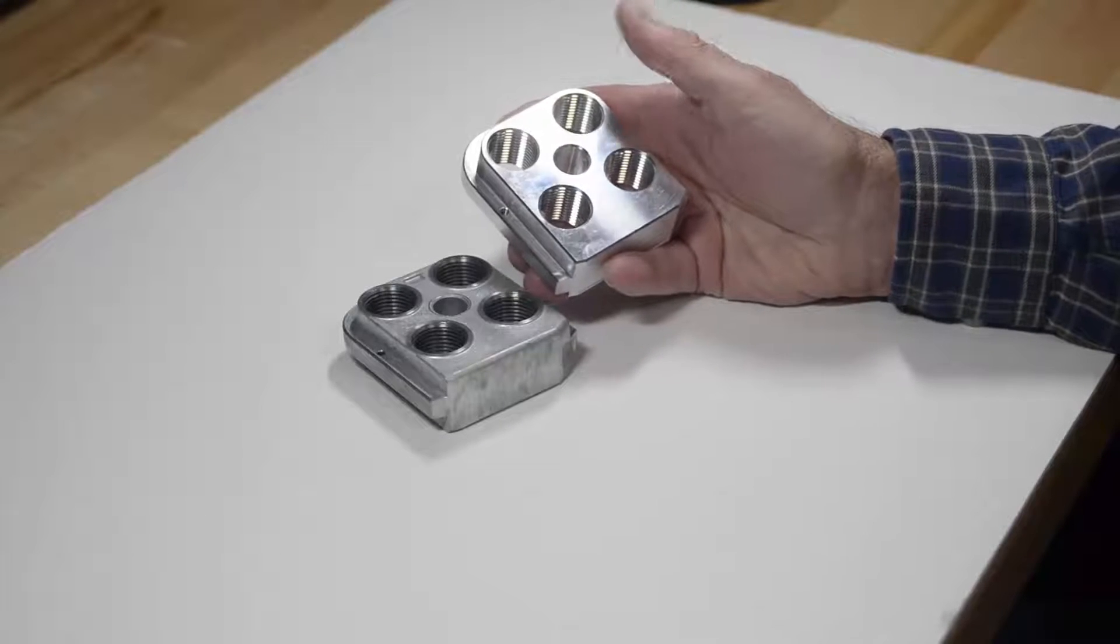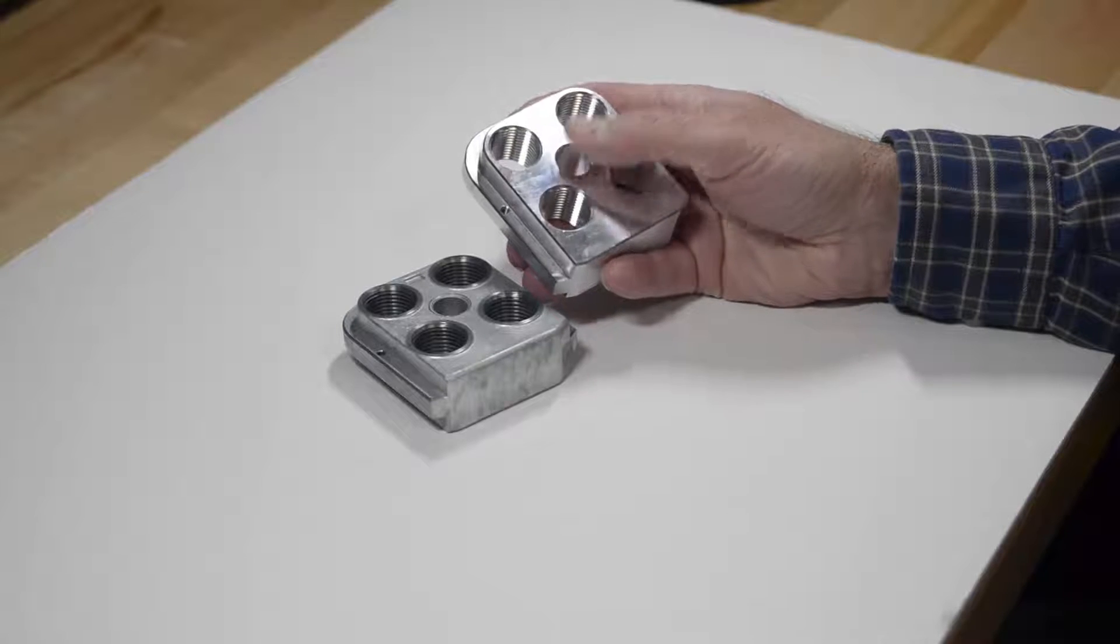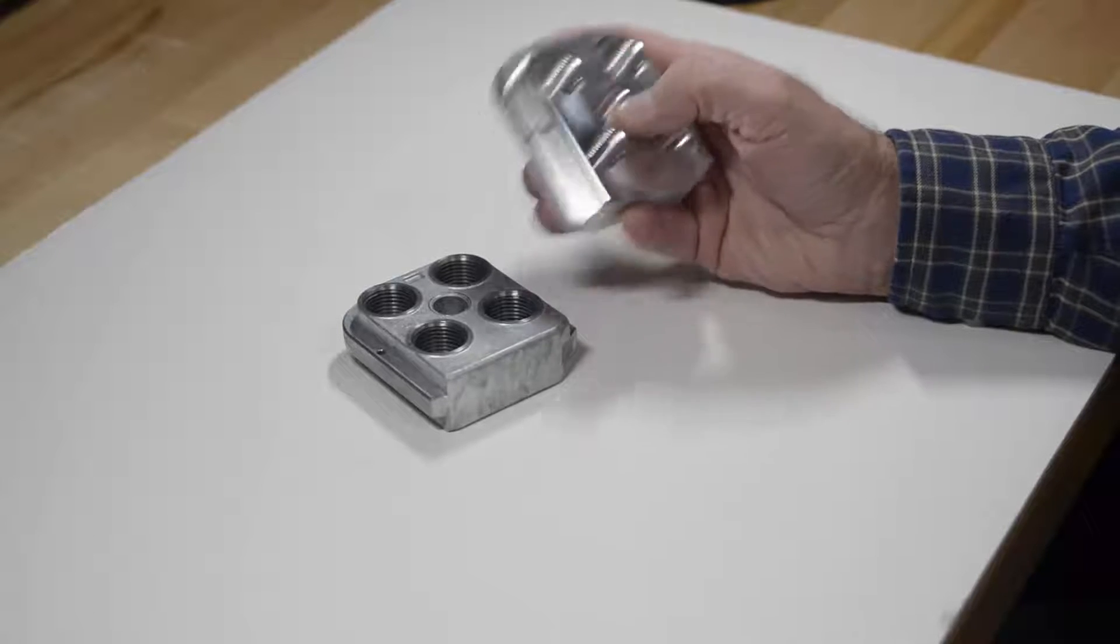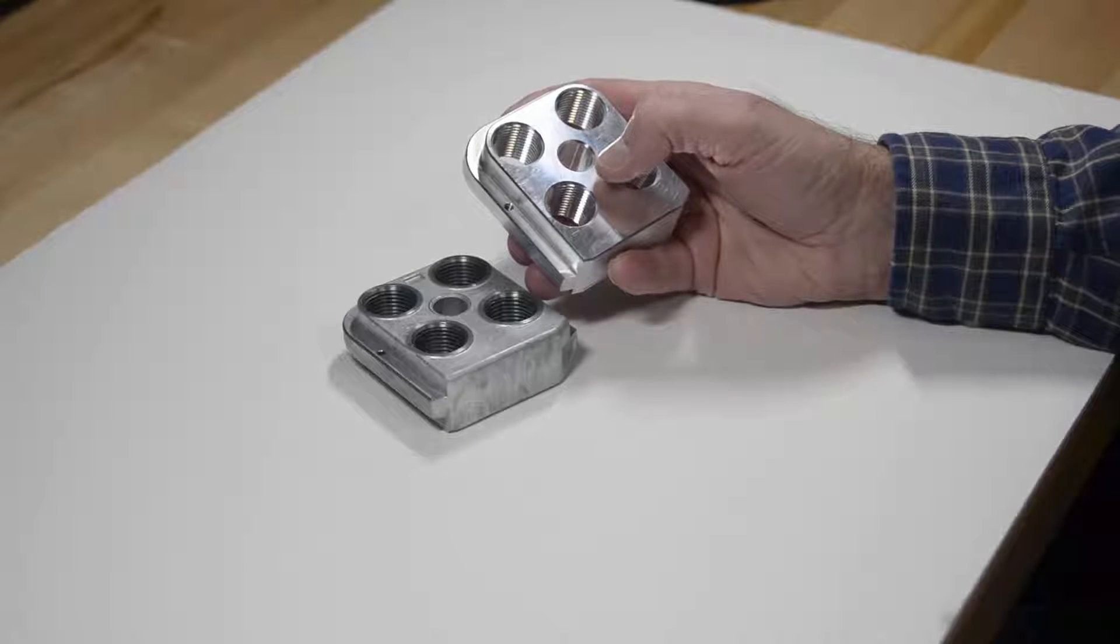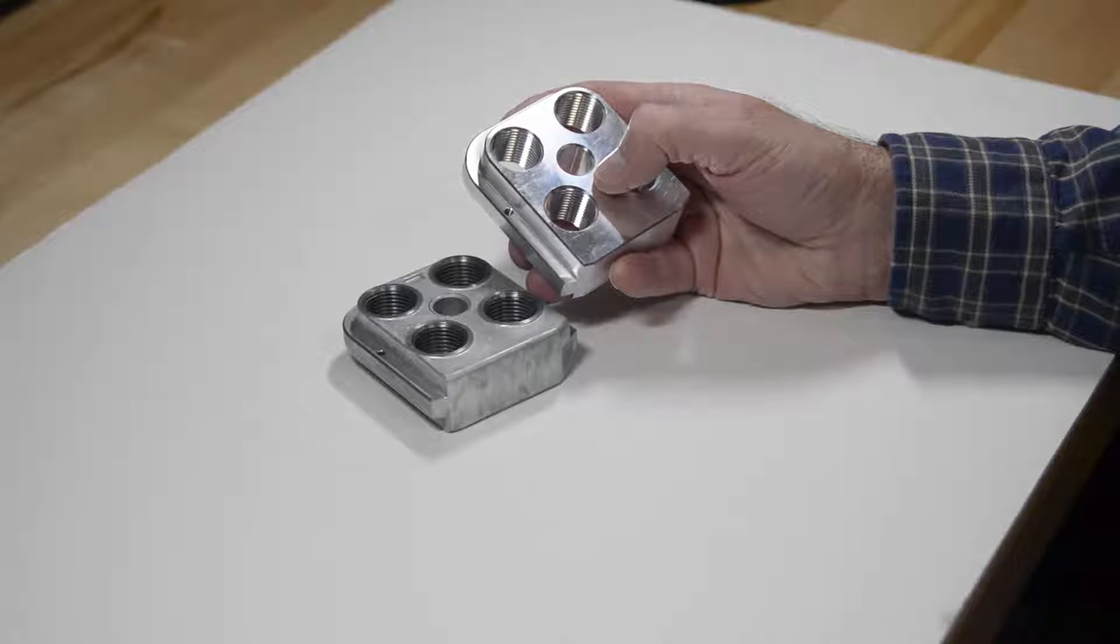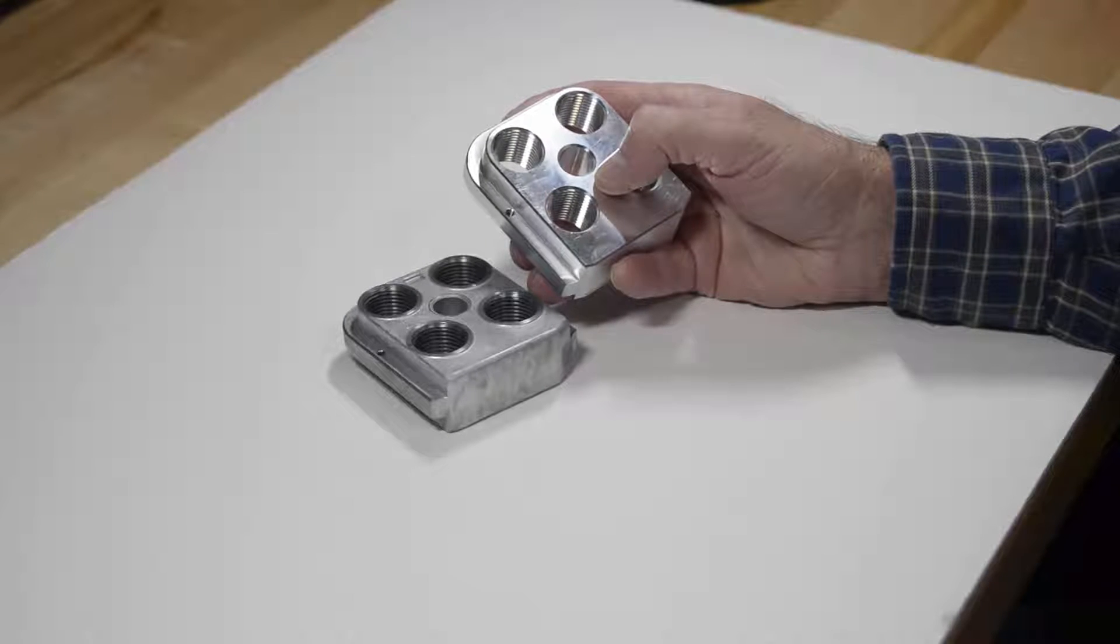The first two things I notice is the CNC has a smoother, brighter surface and is lighter. The CNC tool head weighs 8 ounces, and the Dillon weighs 15 ounces.